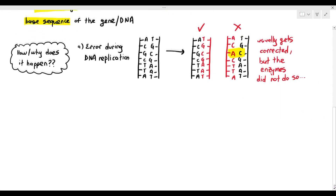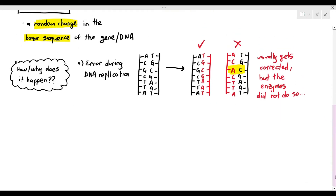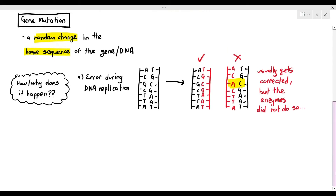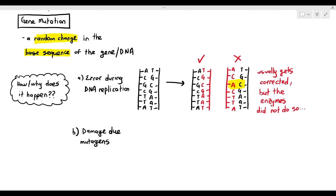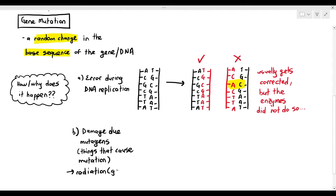Another way in which gene mutations can occur is by damage to the DNA due to mutagens. Mutagens are basically things that cause mutation — for example, radiation, gamma radiation, or carcinogens such as tar.